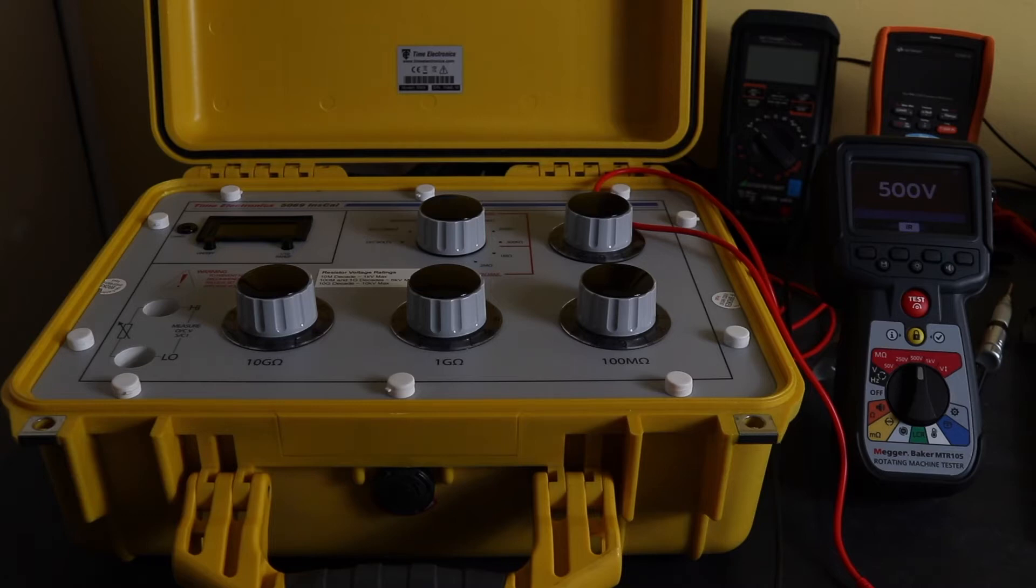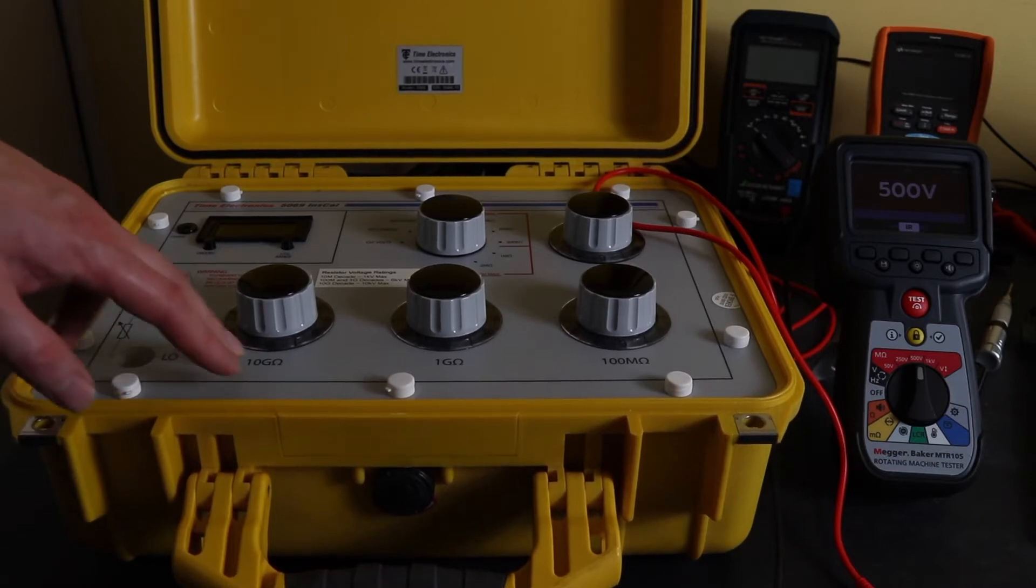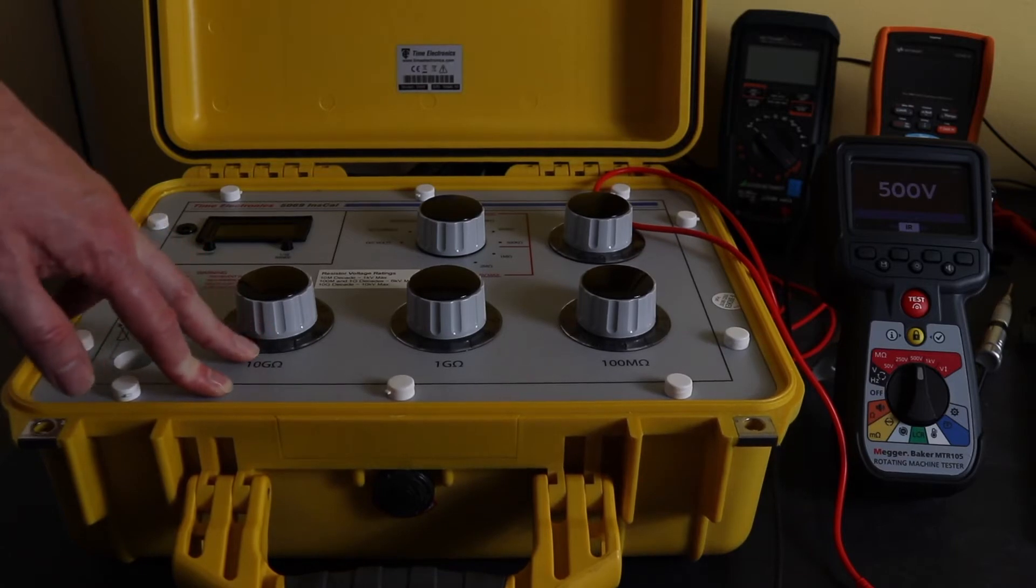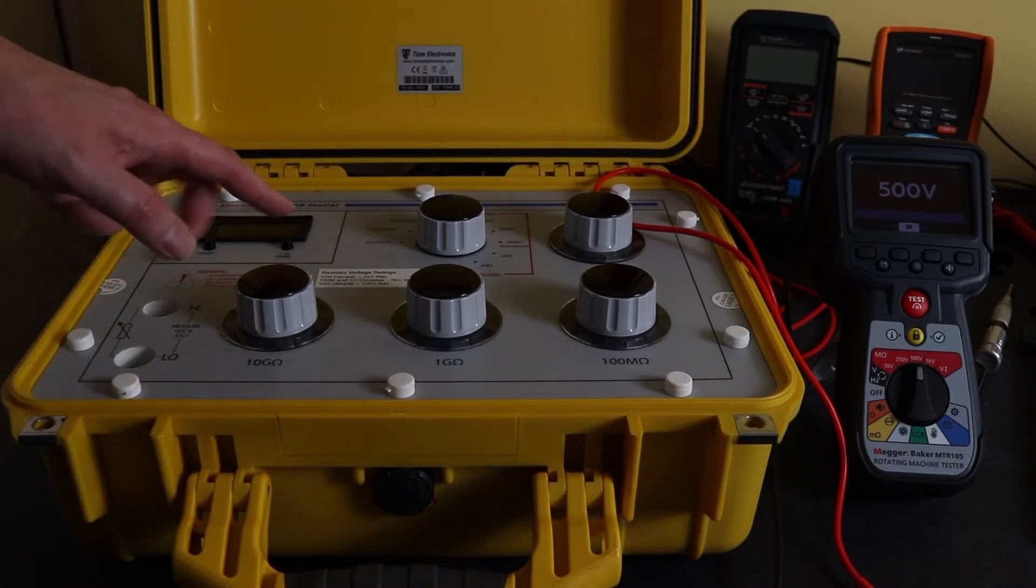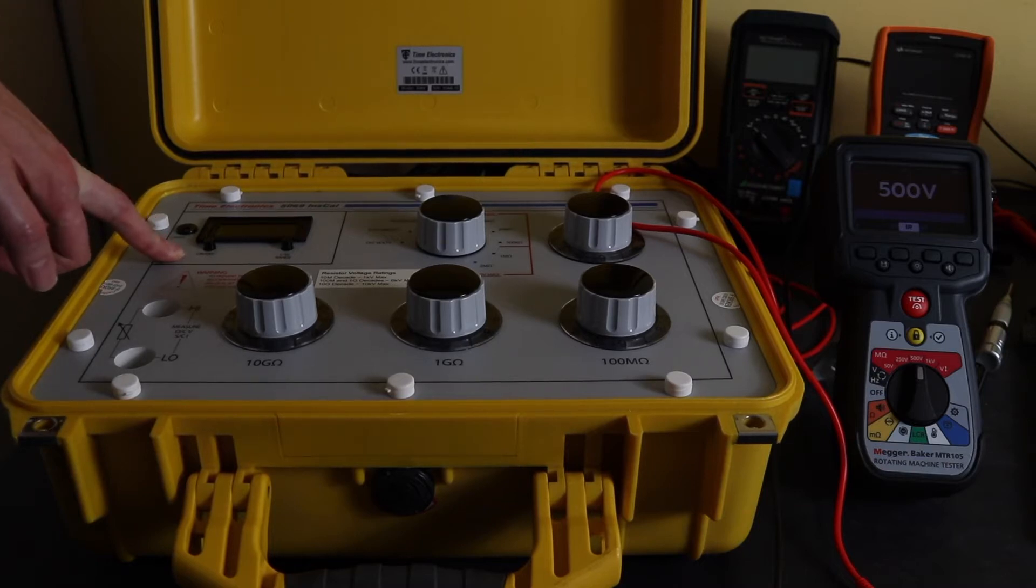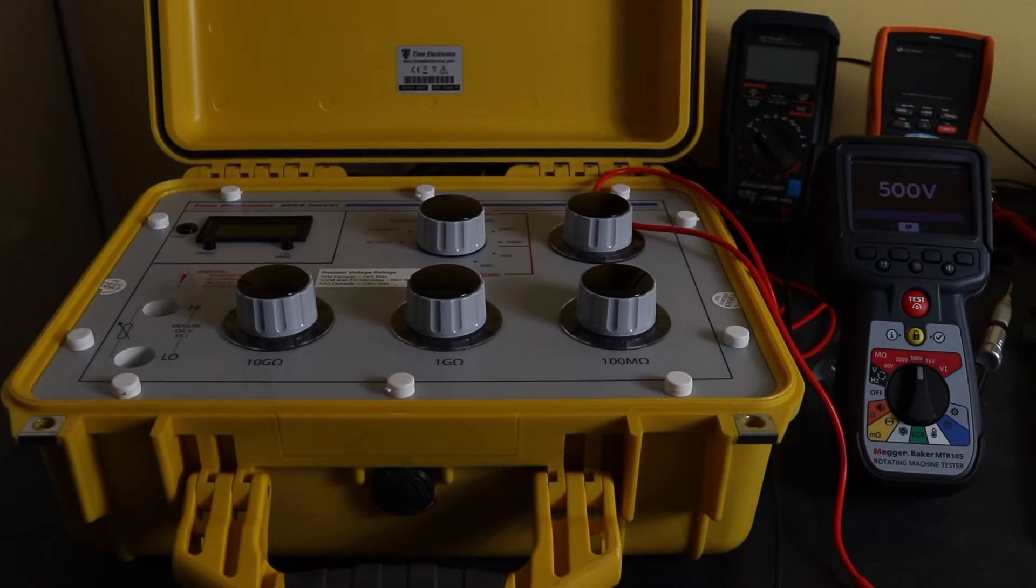To help me with that I've got the 5069 calibrator from Time Electronics. This is a set of decade resistors, high value resistors, goes up to 99 gig ohms and it also has a little meter in here so I can measure short circuit current and open circuit volts of the insulation tester.